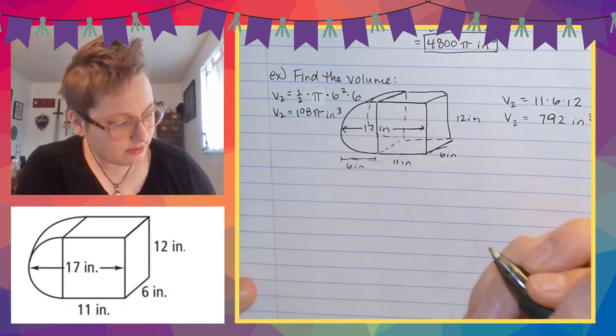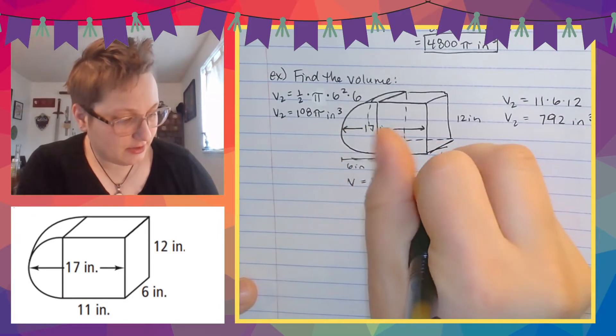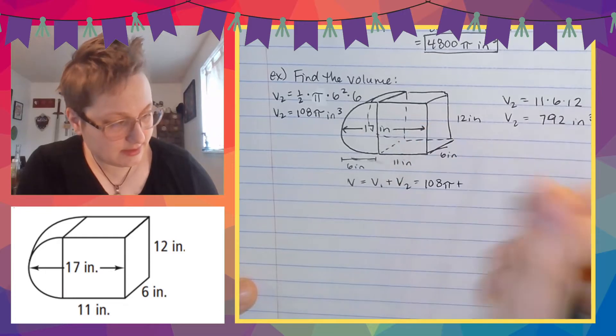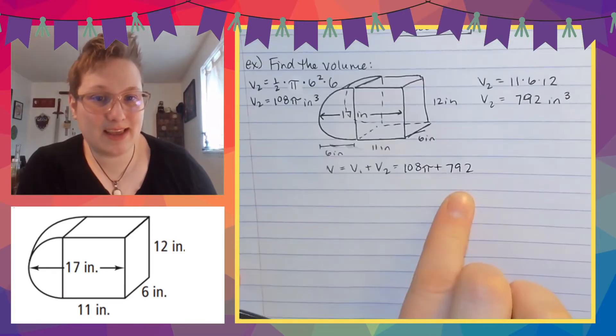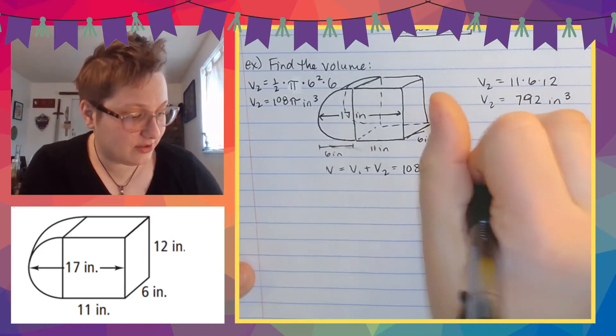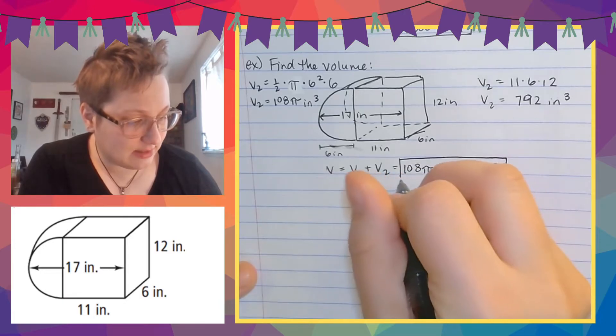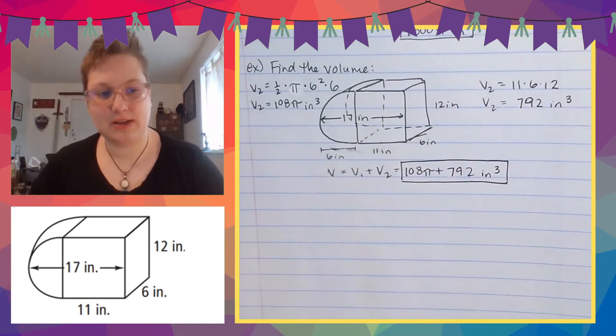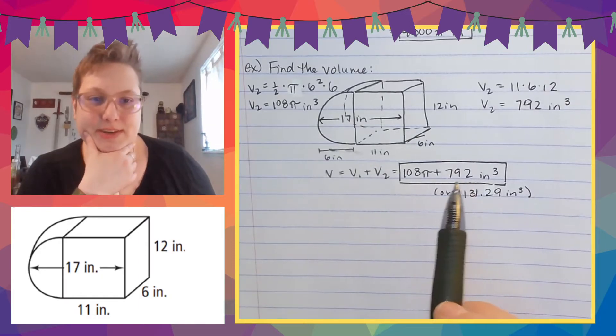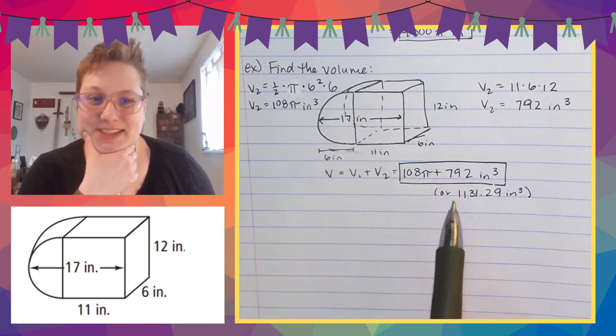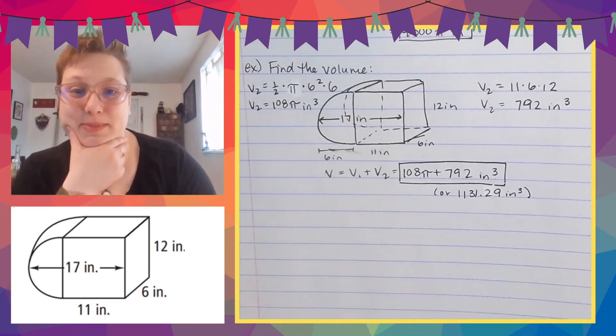So then my total volume is going to be volume one plus volume two again, which is 108 pi plus 792. Now, since this is a pi and this is not a pi, this is actually a correct final answer. If it hurts you, you can figure out what this is as a decimal. So let me do that. There you go. So we could say it's 108 pi plus 792 or 1131.29 cubic inches. So that's the same thing.